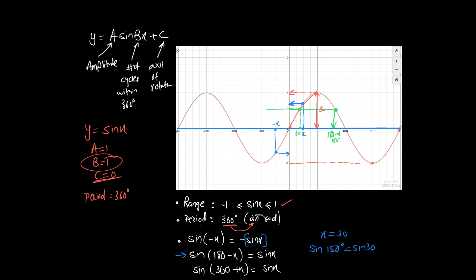You can also observe that sin(360 + x) = sin(x). Adding 360 degrees results in the same trigonometric ratio. For example, adding 360 to -270 gives 90 degrees — so the same trigonometric ratio appears at both points.